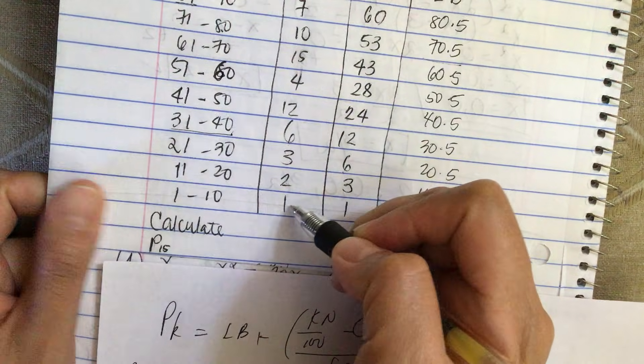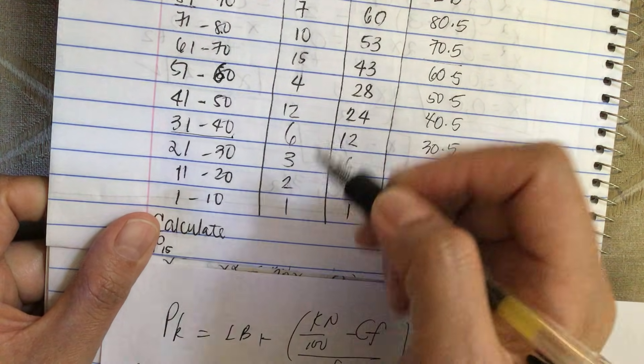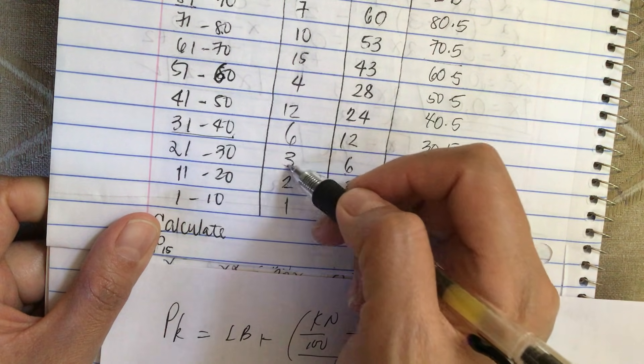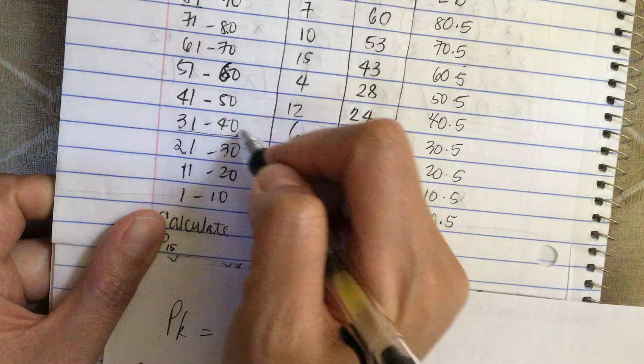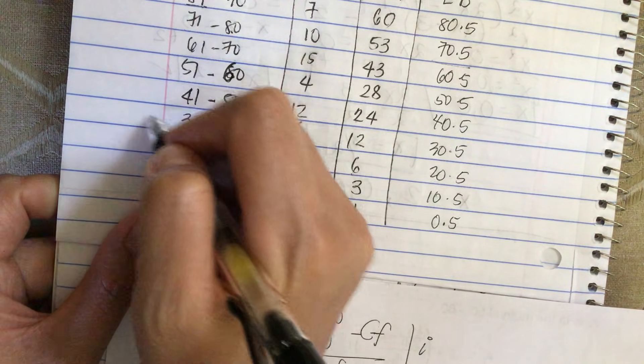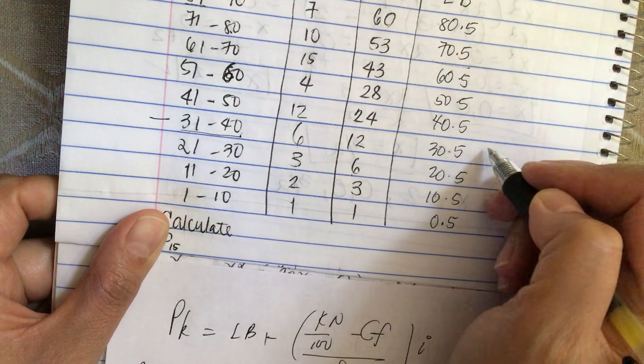So that means the location is at 9. So 1, 2, 3, 4, 5, 6, 7, 8, 9. So it's in this location, this is P15.